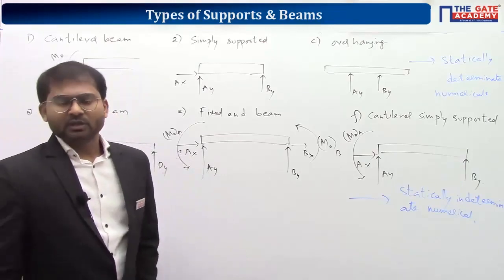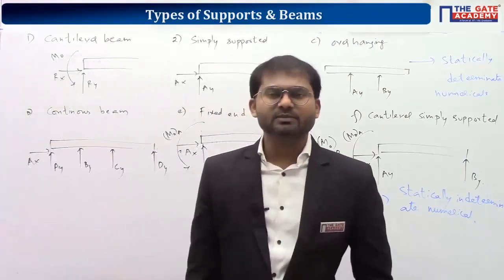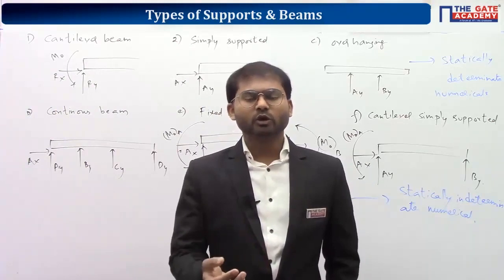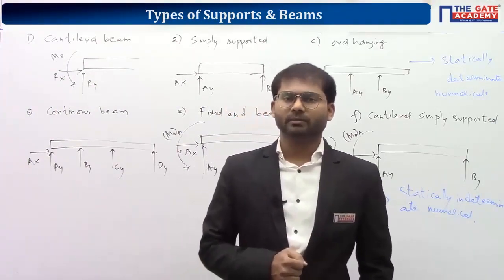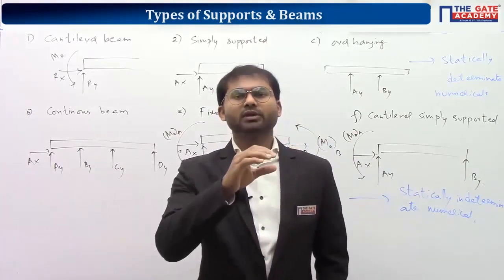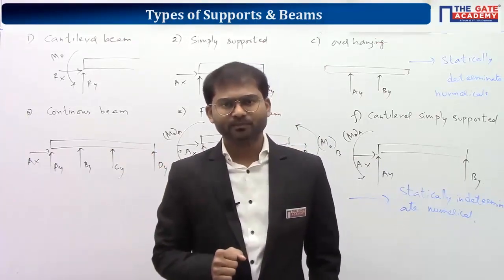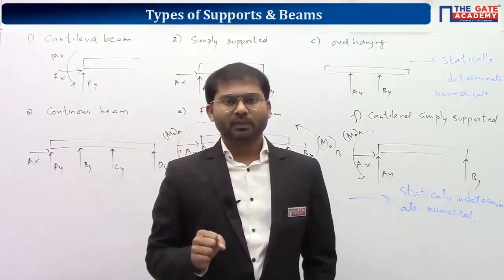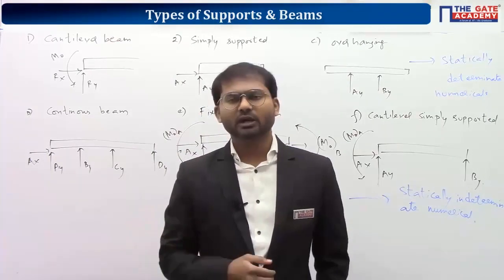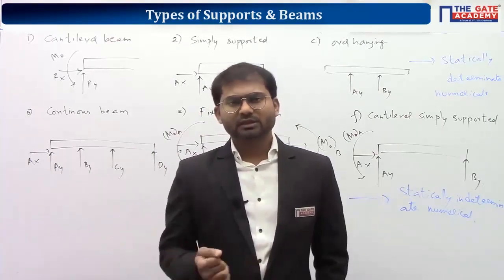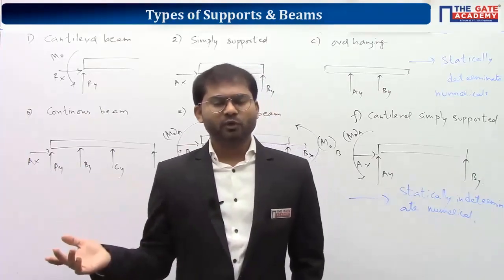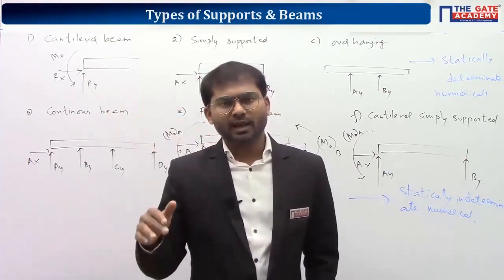Now we have different types of loads. The three major types you will deal with in this chapter are: point load — the load acting at a single point along the length; uniformly distributed load — the load is uniformly distributed along the length with constant intensity; and varying distributed load — where the intensity goes on varying along the length.